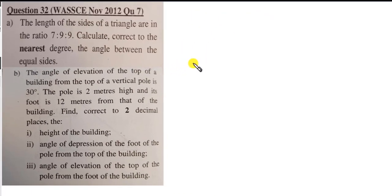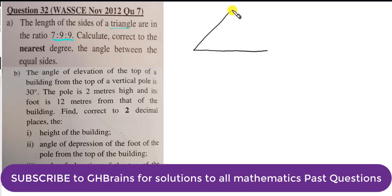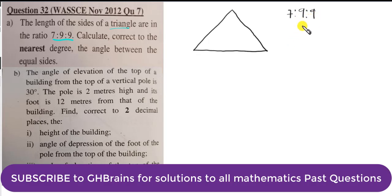So the first one we do is 7a. It says that the length of the sides of a triangle are in the ratio 7 to 9 to 9. So here we are talking about a triangle. A triangle is a plane figure that has 3 sides and 3 angles. These are the lengths of the triangle.